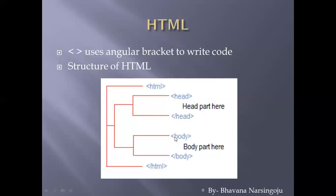When you need to specify the body of your web page, you use the body tag — it is the opening body tag. When you would like to end it, the forward slash body tag indicates that your code ends there under the body part. Inside HTML there are two important parts: the head part and the body part. The head part is used to display the title and name you would like to give to your web page, and inside the body tag you specify the contents of the web page.